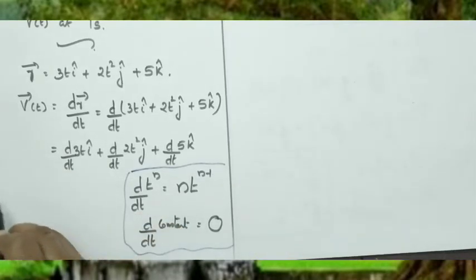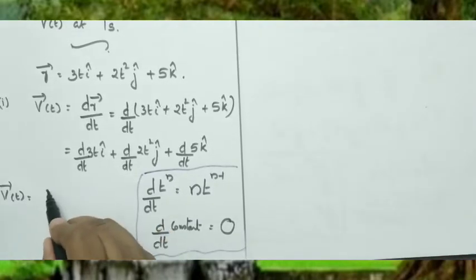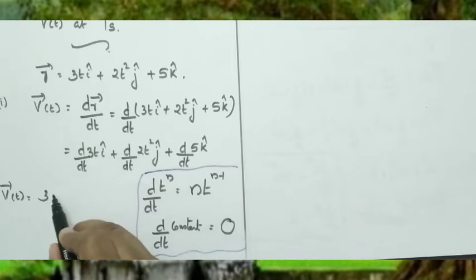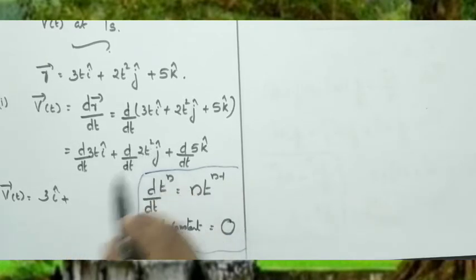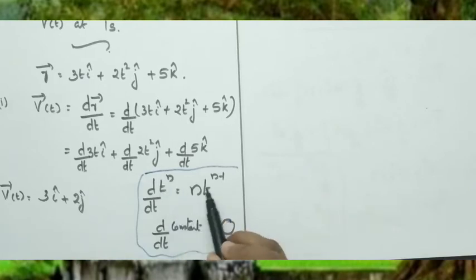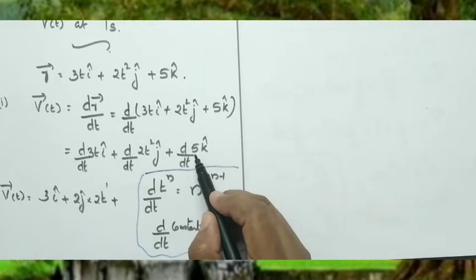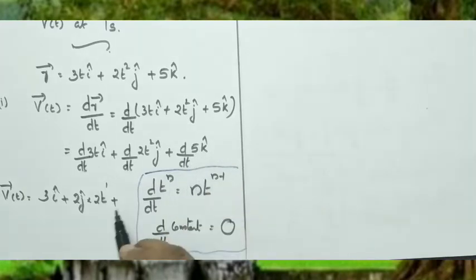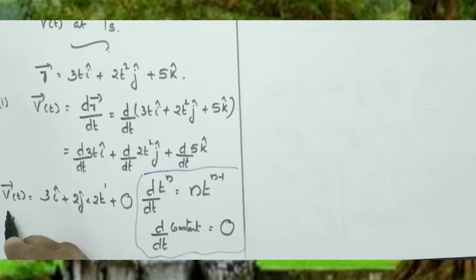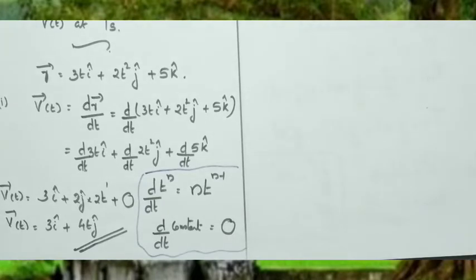Applying the formulas: d/dt of 3t i-cap gives 3 i-cap; d/dt of 2t² j-cap gives 2 × 2t j-cap = 4t j-cap; d/dt of 5k-cap is 0 since 5 is a constant. Therefore the velocity vector is v(t) = 3i-cap + 4t j-cap.